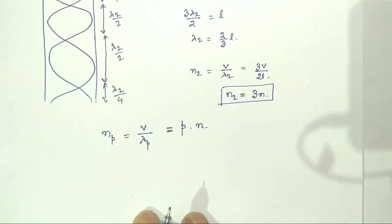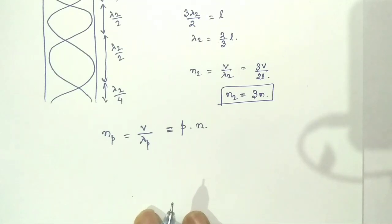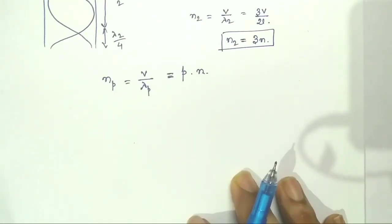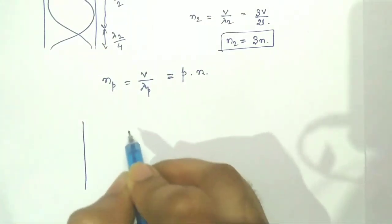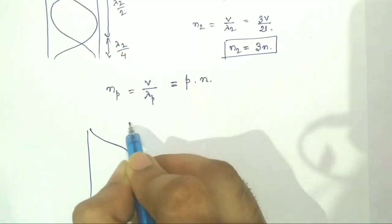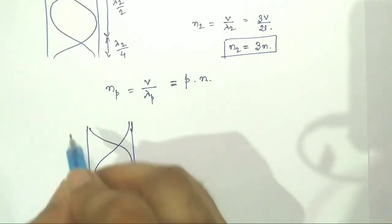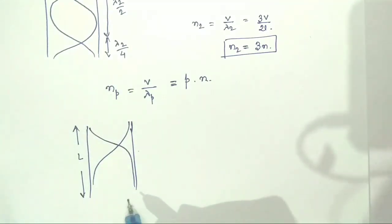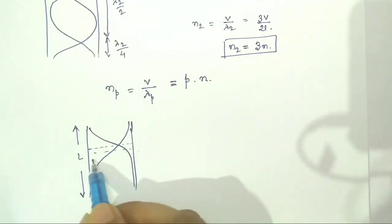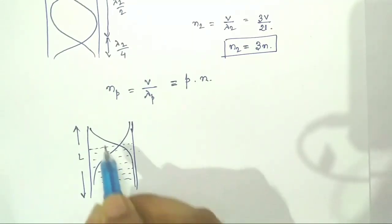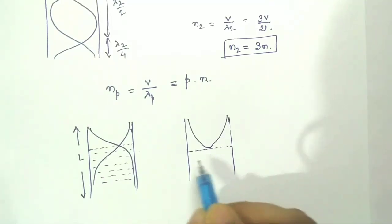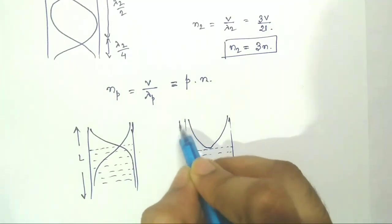We can see that in the case of an open organ pipe, both odd and even harmonics are present. Hence, the sound emitted from an open organ pipe is more melodious than that of a closed organ pipe. If you submerge an open organ pipe into water, it will behave like a closed organ pipe. Suppose this is your open organ pipe of length L, but you have put it into water. It will be like a closed organ pipe of length L by 2, and this length is L by 2.